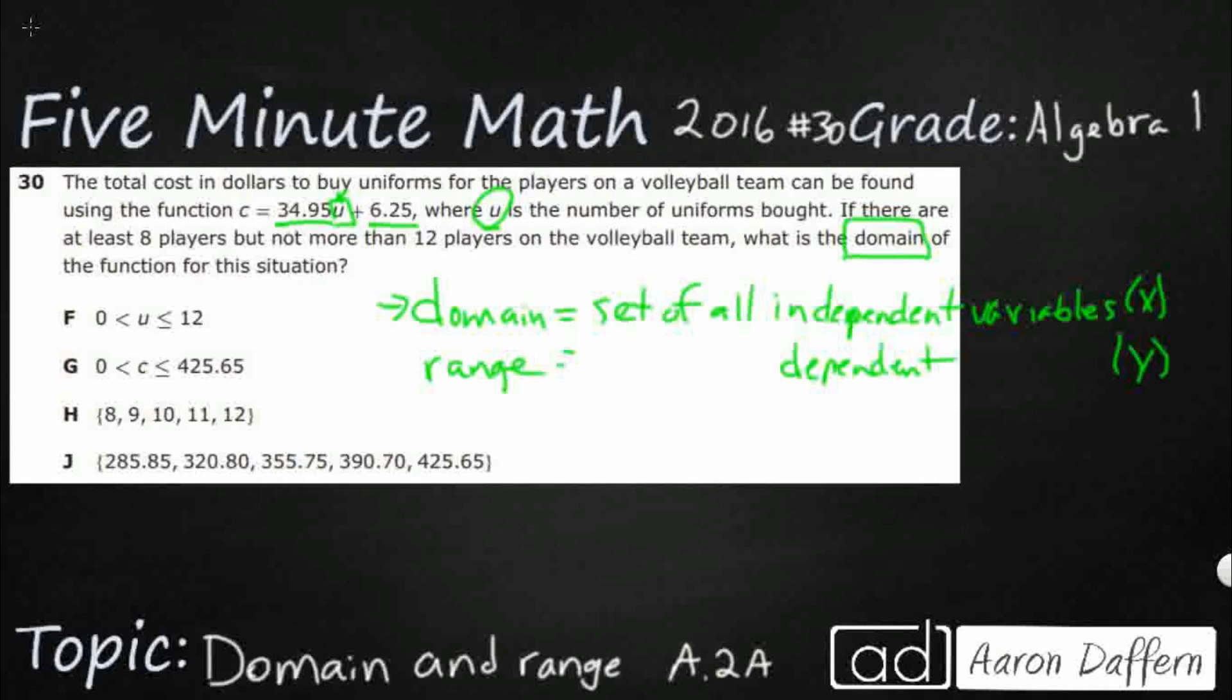Well, it's this second sentence right here that says there are at least 8, but not more than 12. So what we're assuming is every person gets one uniform. They didn't tell us that, but that's a safe assumption.